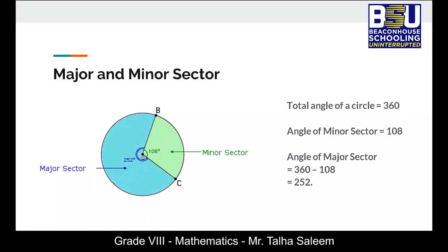Now let's look into the concept of major and minor sector. When we draw a sector in a circle, we're basically dividing the circle into two parts as shown on the screen right now. One part is smaller in size which is colored green is called minor sector. The other part obviously bigger in size that's colored blue is called major sector. Now we know that the total angle measure of a circle is 360 degrees. So if the angle of minor sector is 108, we can simply subtract it from 360 to get the value of angle of the major sector which in this case is 252 degrees.